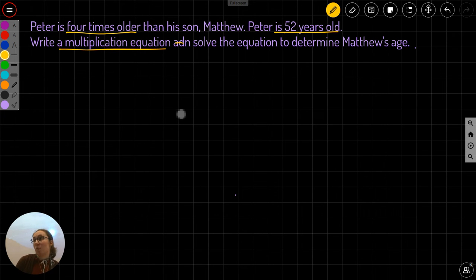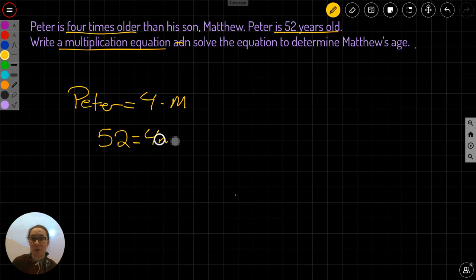We are writing a multiplication equation. We could write a division problem, but it asks us to write a multiplication equation, so that's what we're going to do. If Peter is 52 years old and he is four times older than his son, then Peter equals four times Matthew, which we'll write as M. And Peter is 52, so 52 equals four times M, or 4M. Now I've got an equation. It's a multiplication equation.